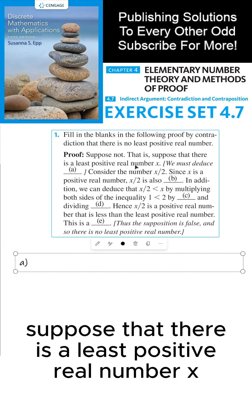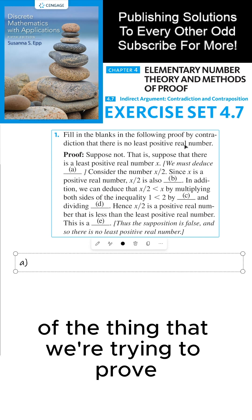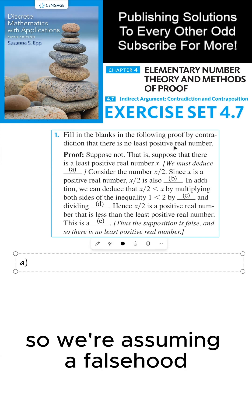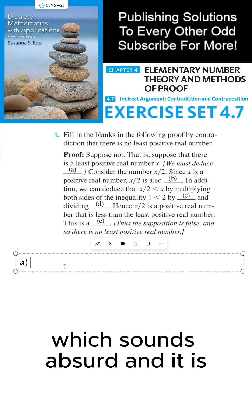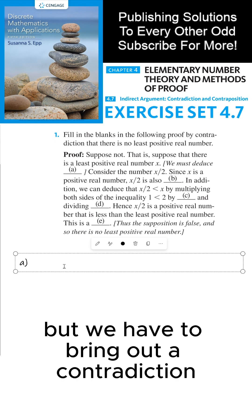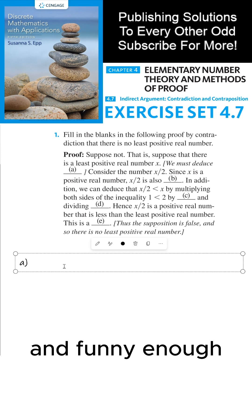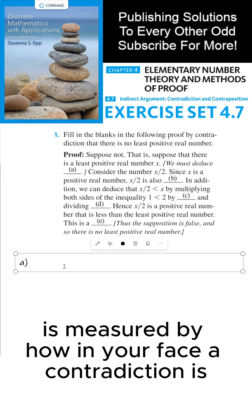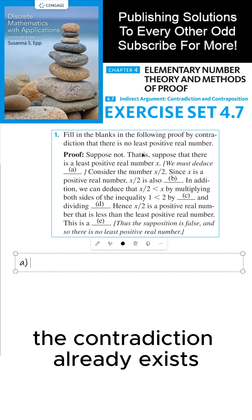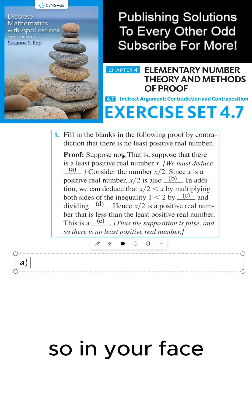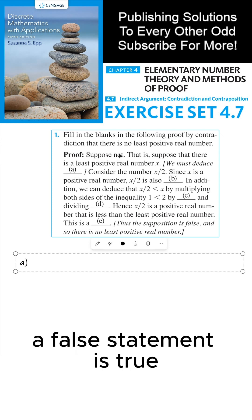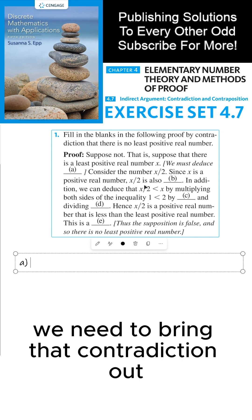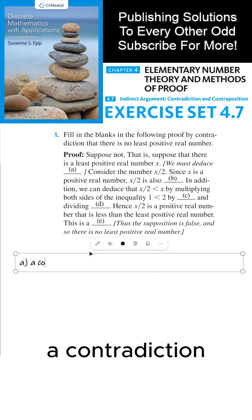Suppose that there is a least positive real number X. That's the negation of the thing that we're trying to prove, so we're assuming a falsehood. We have to bring out a contradiction. The contradiction already exists but it's not so in your face — the contradiction is when we suppose that a false statement is true. To explain why that's a contradiction, we need to bring that contradiction out. So we must deduce a contradiction.